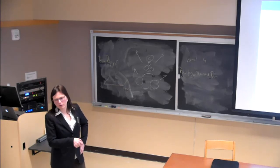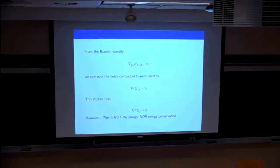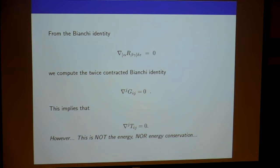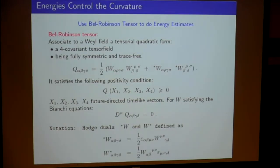I can shoot out geodesics and they will intersect null infinity at a round sphere. The black hole region: from the pedestrian definition I gave earlier, here is a geometric definition. The black hole region of an asymptotically flat space-time is the set of points not in the past of future null infinity — meaning I cannot see it from null infinity, nothing escapes to there. That's the geometric definition.